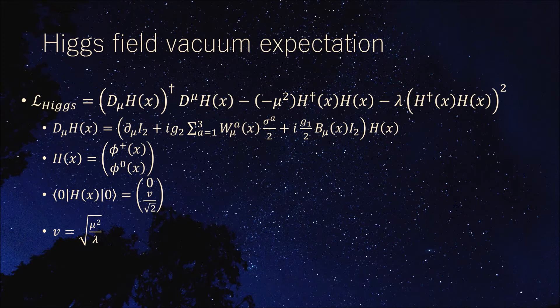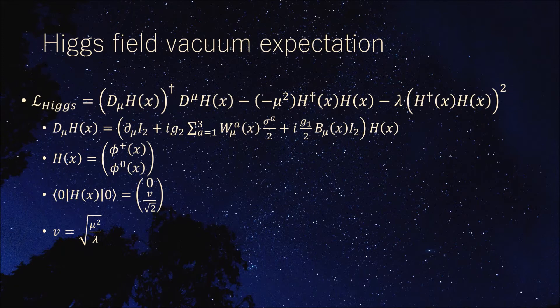It is assumed that the Higgs field H has a non-trivial vacuum expectation value. V is a positive real number given by the Lagrangian density. By substituting the vacuum expectation value into the first term on the right side of the Lagrangian density, the mass term of the gauge field appears.